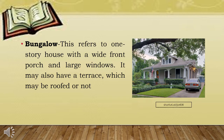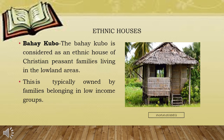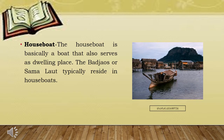Bungalow. This refers to a one-story house with a wide front porch and large windows. It may also have a terrace which may be roofed or not. Next are ethnic houses. Bahay-Kubo. The Bahay-Kubo is considered an ethnic house of Christian peasant families living in the lowland areas. This is typically owned by families belonging to low income groups. Next is houseboat. The houseboat is basically a boat that also serves as a dwelling place. The Bajaws or Samal Laot typically reside in houseboats.